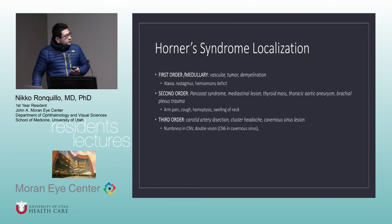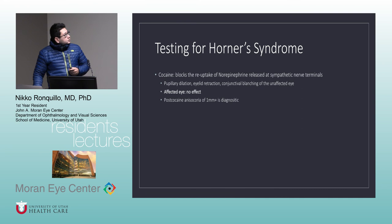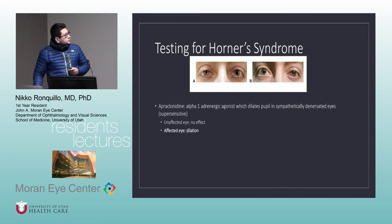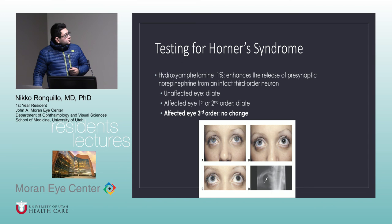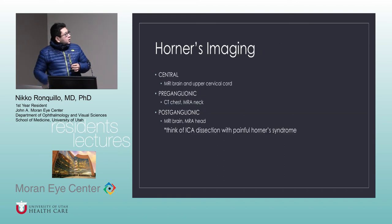With apraclonidine, also look for ptosis resolution — not just the anisocoria. An important localization point: Horner syndrome plus sixth nerve palsy is the classic cavernous sinus localization. When you see a sixth nerve palsy and Horner's together, you must look there.